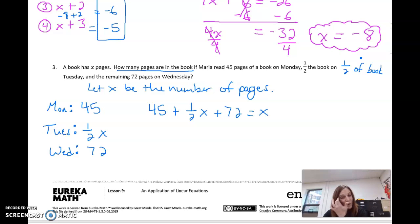That's x. So, it seems a little weird we're using x twice. But keep in mind what it's focused on. It's focused on how many total pages in the book. And that's what x is. So, let's simplify this. Simplify each side of the equal sign. I can add 45 and 72 together. And when I get that, I get 117 plus half of x equals x.